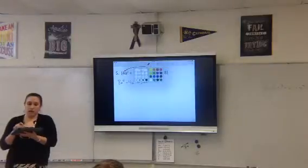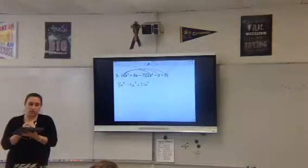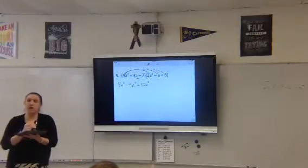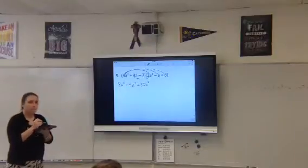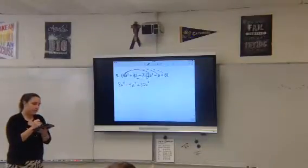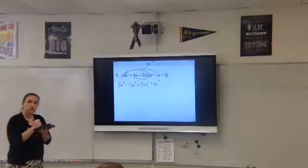All right, so now you're going to take the 3a through. Okay. So what is 3a times 2a squared, Link? No, I mean, 6a to the 3. Good. 6a to the third.